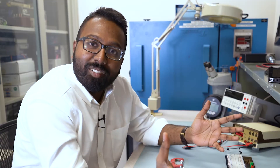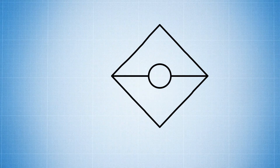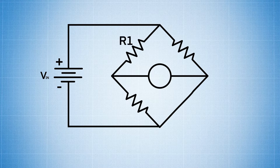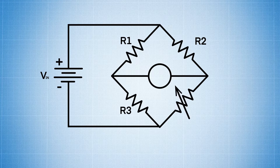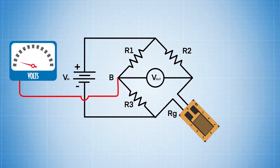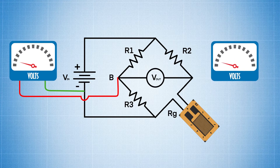Here's how it works. Here we have a simple diagram of a Wheatstone bridge circuit consisting of one power source, three precision resistors — namely R1, R2, and R3 — and one variable resistor, namely RG, which also acts as your strain gauge.